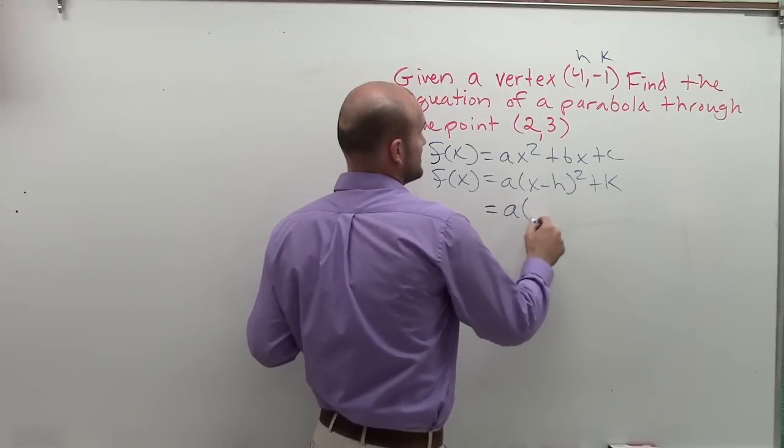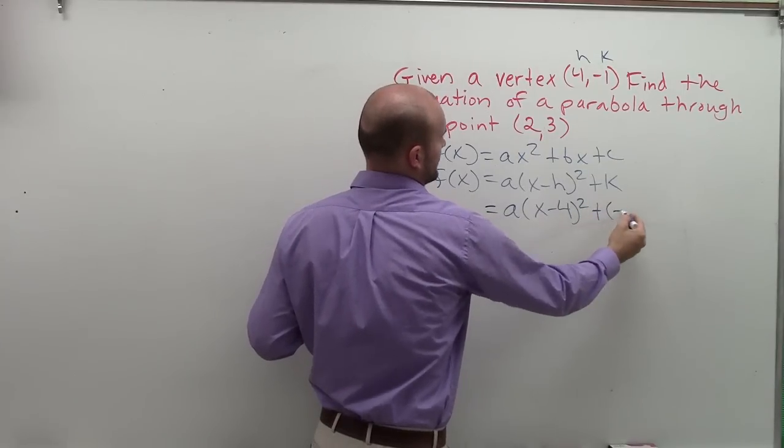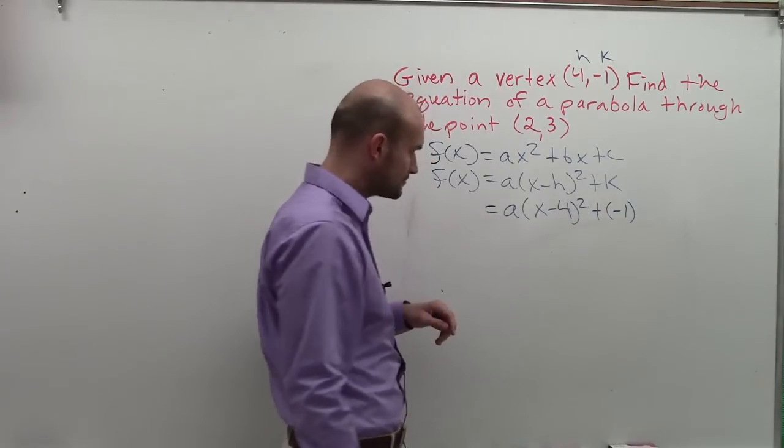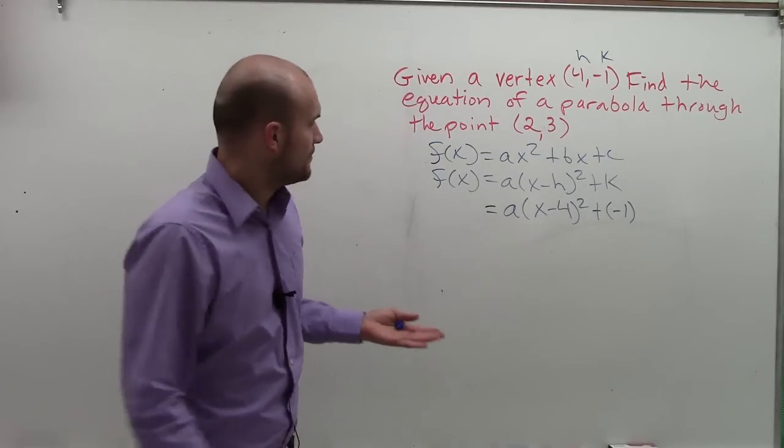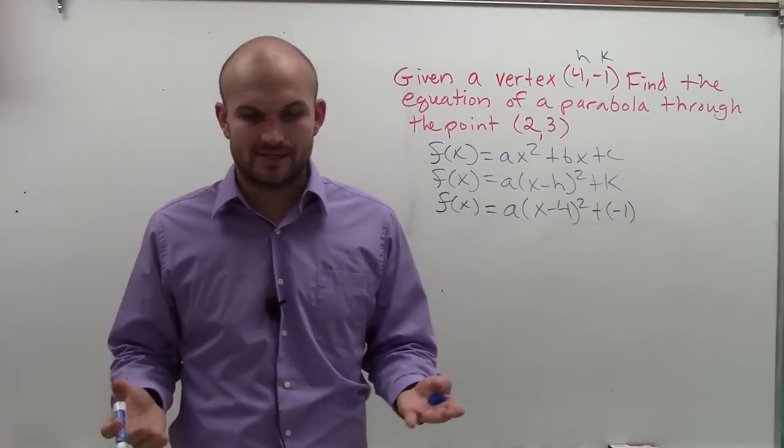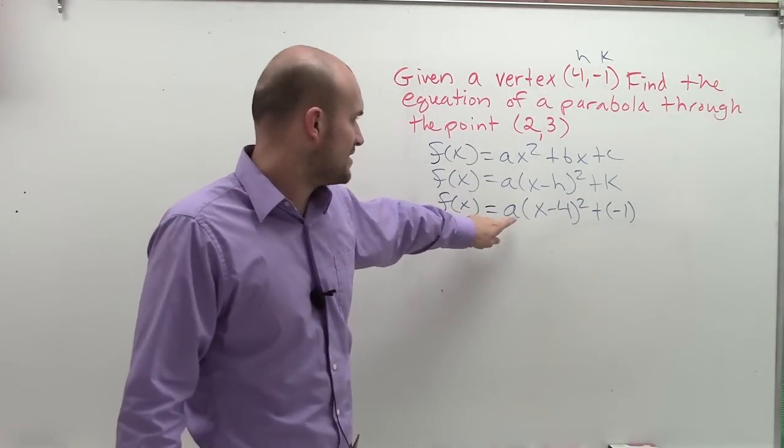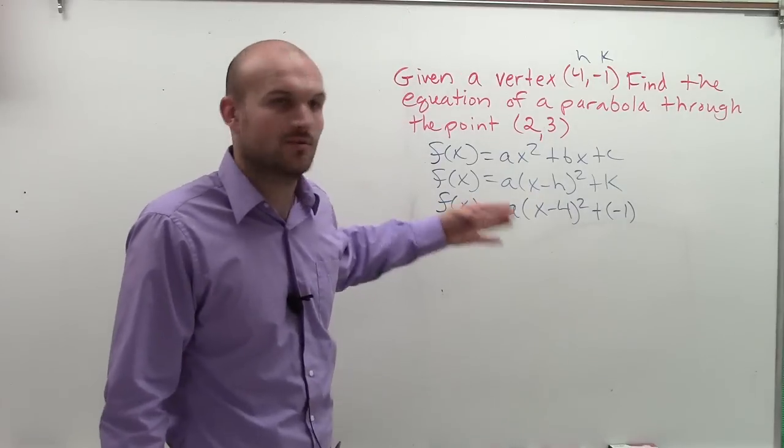So that's exactly what I'm going to do. I'm going to plug in negative 1 for k and 4 in for h. So I have a times x minus 4 squared plus negative 1. Now that equals f of x. Now the next important thing is, that doesn't give us the full equation though. We still need to figure out what a is, and how can we represent x and f of x?